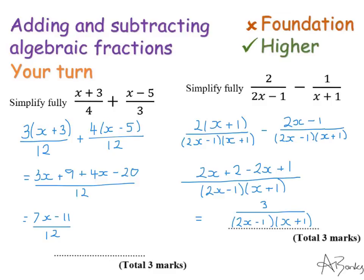Here's the solutions. So the first question, you should have been using a common denominator of 12. And when you expand your numerators and simplify, you have 7x minus 11 over 12. And the second question, use a common denominator of 2x minus 1 and x plus 1 in brackets.